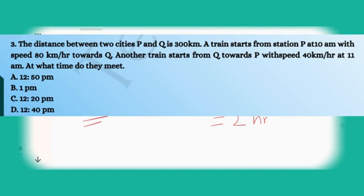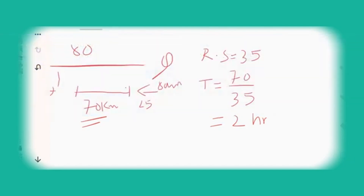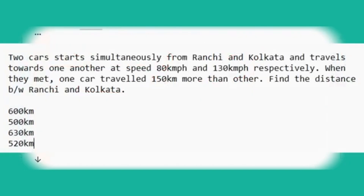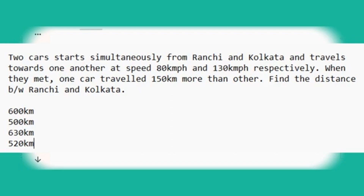The next problem: two cars start simultaneously from Ranchi and Kolkata and travel towards one another at speeds of 80 km/h and 130 km/h respectively. When they meet, one car has traveled 150 kilometers more than the other. Find the distance between Ranchi and Kolkata.